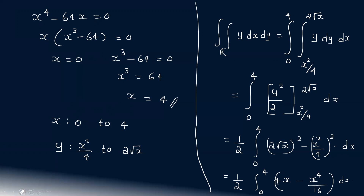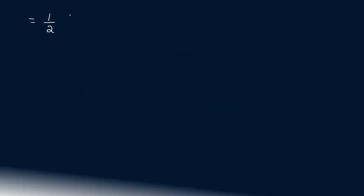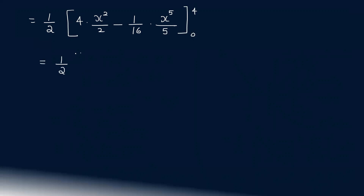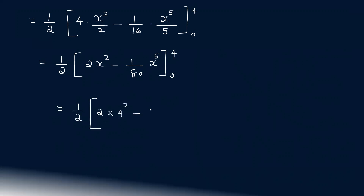That equals (1/2) into [4 times x²/2 minus (1/16) times x⁵/5] evaluated from 0 to 4, which is (1/2) times [2x² - x⁵/80] from 0 to 4. Substituting x = 4: (1/2) into [2(16) - (4⁵)/80].